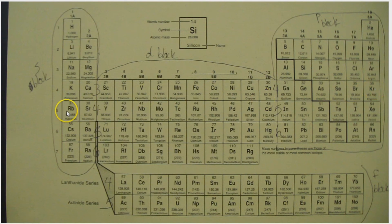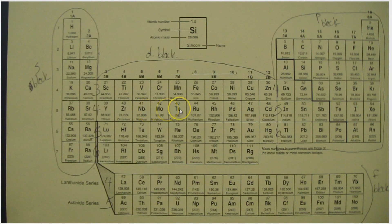Down to rubidium: 5s1, then 5s2. When we get to yttrium, that's 4d1, zirconium is 4d2, then 4d3, and so on down to cadmium, which is 4d10.